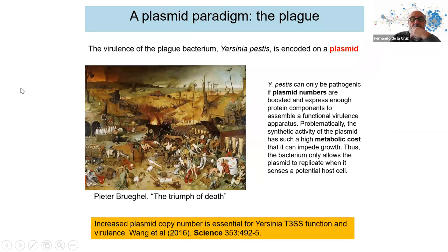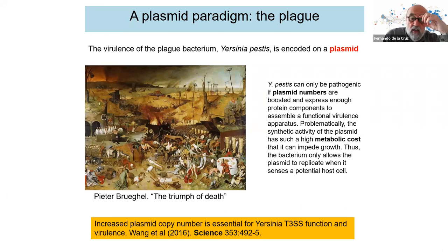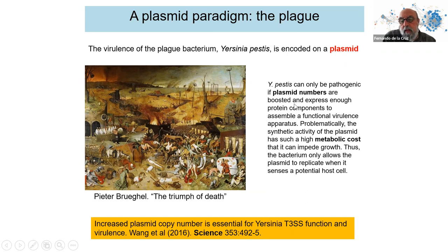Probably the most famous plasmid in all ages has been the plasmid of Yersinia pestis, which carries the system for control of the type 3 secretion system, essential for virulence of Yersinia pestis and therefore the plague that isolated Europe for many centuries. Interestingly, this plasmid is virulent because it increases its copy number in the right environment.